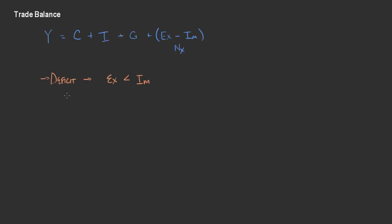There's another term that often gets thrown around that we don't use as commonly here in America, but other countries do — which is a trade surplus. The trade surplus is obviously just the exact opposite: that would be where exports are greater than imports for an economy. So the net exports would be a positive number.